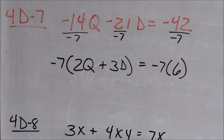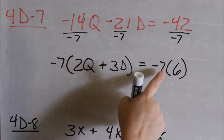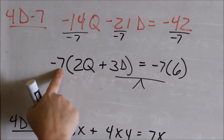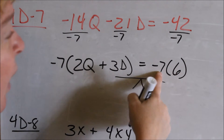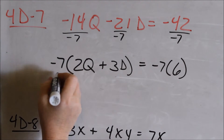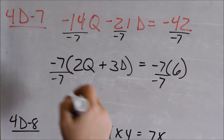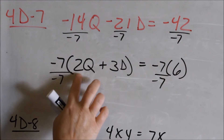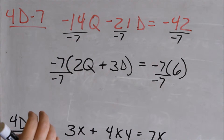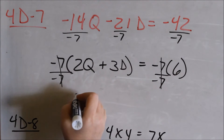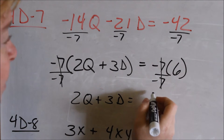Another step you can take: if you divide both sides by negative 7, your negative 7s will cancel. I'm trying to balance this seesaw around my equal sign — if I take negative 7 away from here, I can take negative 7 away from here and it still balances. Negative 7 is being multiplied, so dividing is the opposite. That becomes 1 on each side, and you're left with 2q plus 3d equals 6.